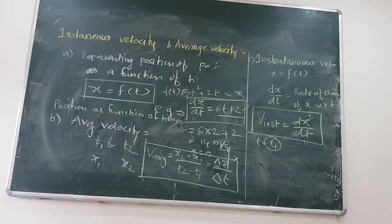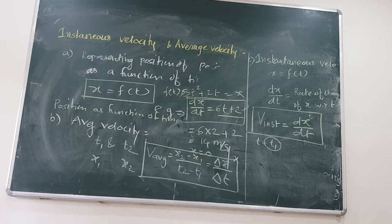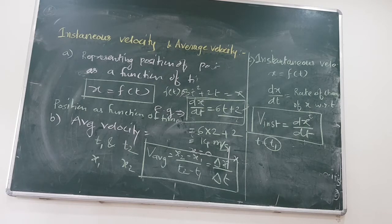If x is f of t, then dx by dt is instantaneous velocity. So if x is given, you take the derivative and get dx by dt — which is instantaneous velocity. And if dx by dt is given and you want to find out x, you integrate dx by dt to get x. Now you understand why we learned integration — because if velocity is given as a function of time, you can integrate and get position.